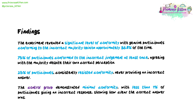Findings. The experiment revealed a significant level of conformity, with genuine participants conforming to the incorrect majority opinion approximately 36.8% of the time. 75% of participants conformed to the incorrect judgment at least once, agreeing with the majority despite their own correct perception. 25% of participants consistently resisted conformity, never providing an incorrect answer. The control group demonstrated minimal conformity, with less than 1% of participants giving an incorrect response, showing how clear the correct answer was.